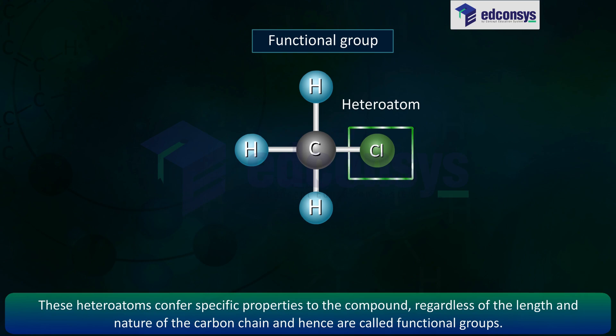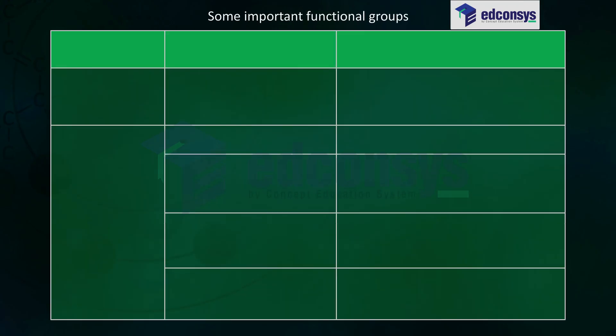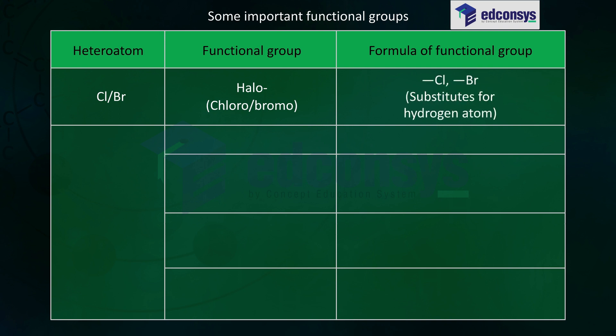Some important functional groups. Heteroatom Cl/Br, functional group halo (chloro/bromo), formula of functional group Cl/Br, substitutes for hydrogen atom. Heteroatom oxygen, functional group 1. Alcohol, formula of functional group OH.